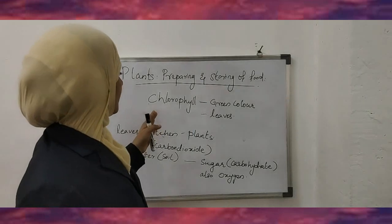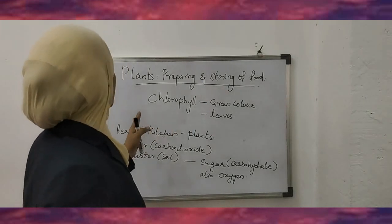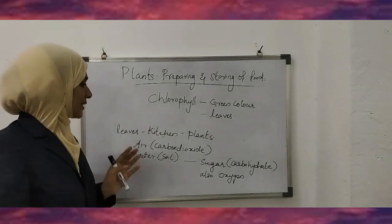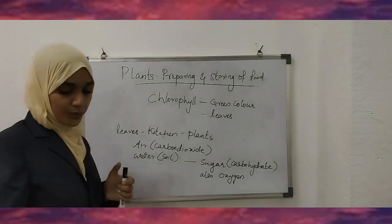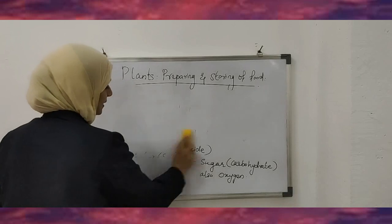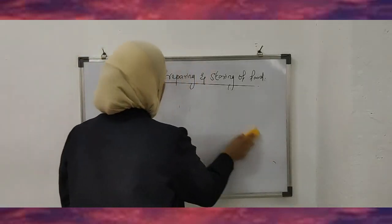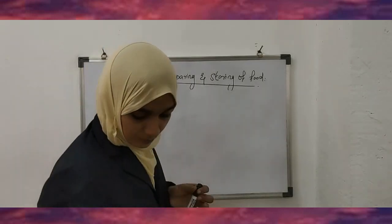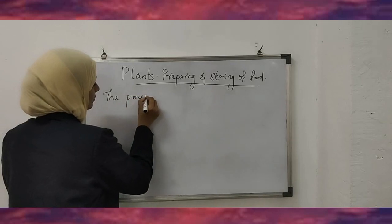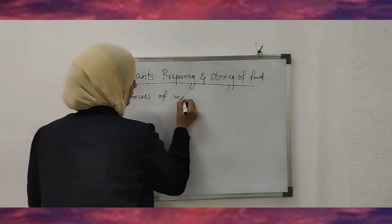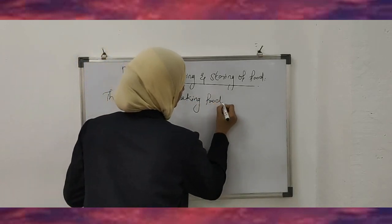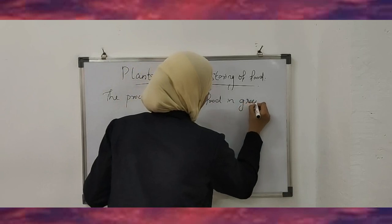To recap: the green pigment that gives green color is called chlorophyll. The leaves are the kitchen of the plant. The plant produces food with the help of air, water, and sunlight in the presence of chlorophyll. The process of making food in green plants is called photosynthesis.